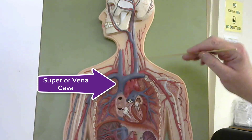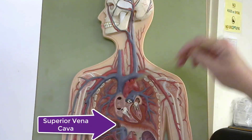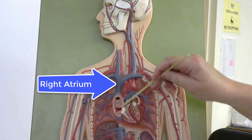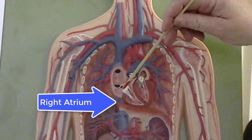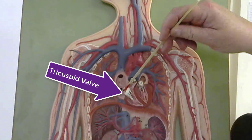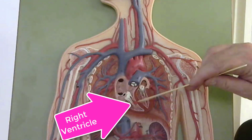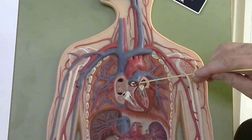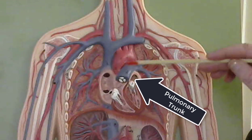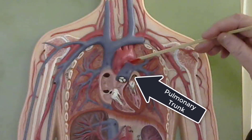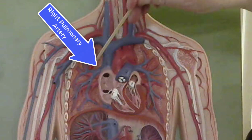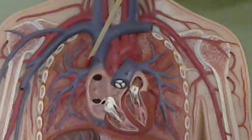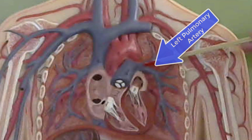Here is the superior vena cava, which drains into the right atrium. From there, the blood goes through the tricuspid valve and enters the right ventricle. It then goes through the pulmonary semilunar valve to the pulmonary trunk. The pulmonary trunk bifurcates to form the right pulmonary artery and the left pulmonary artery.